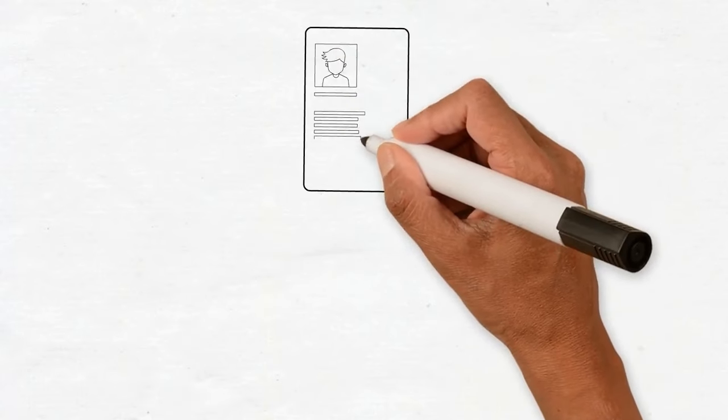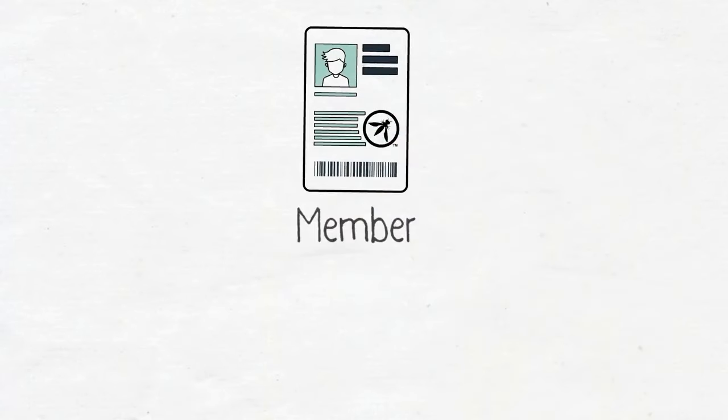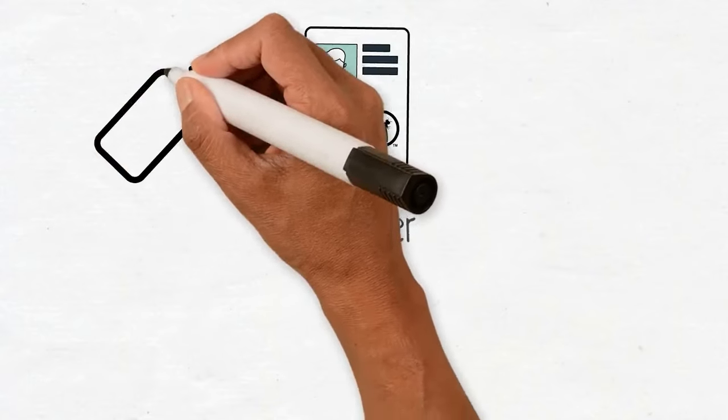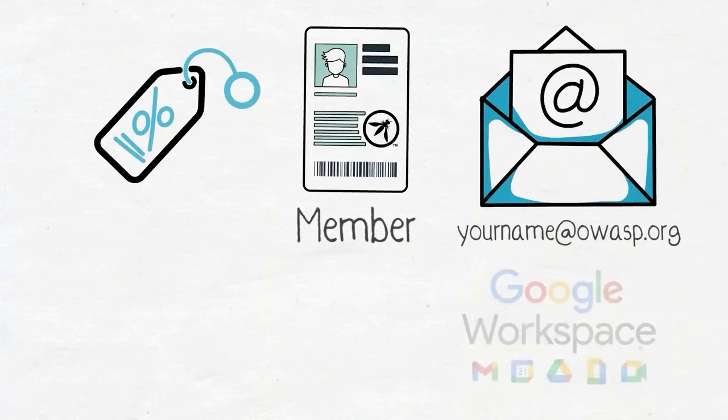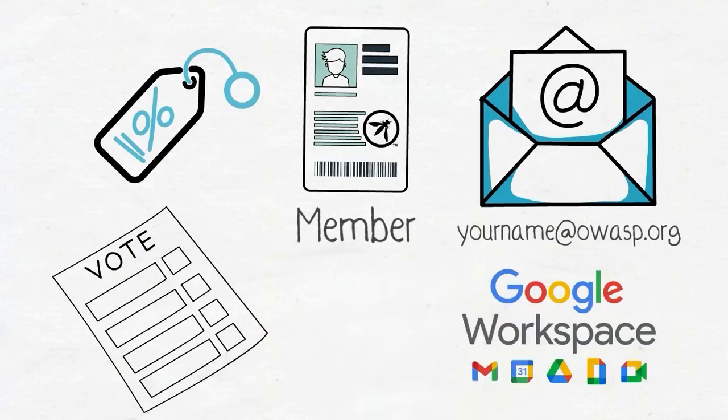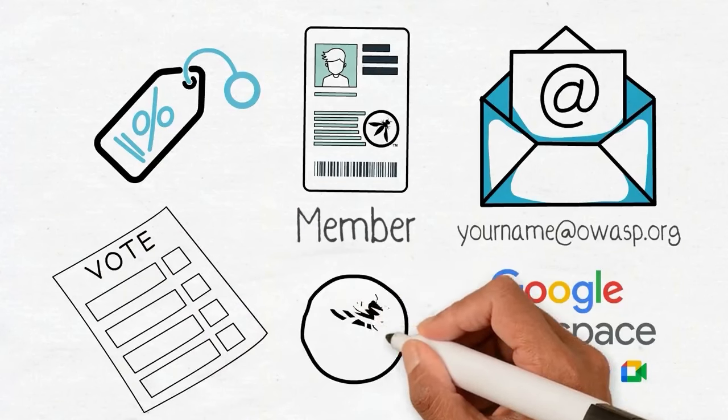One of the many ways you can get involved is to become a member. The membership benefits include discounts for events and trainings, your own OWASP email address and Google Workspace access, a vote in our OWASP Global Board elections, employment and meaningful volunteer opportunities.